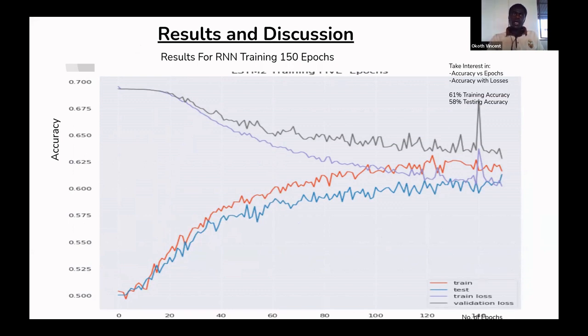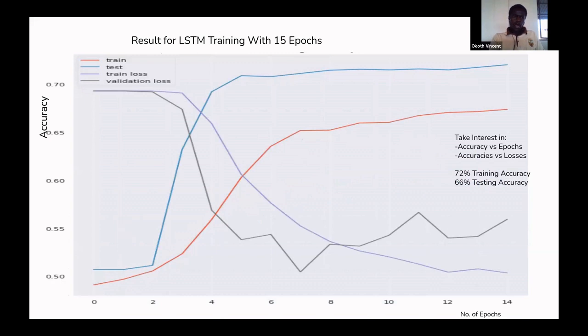Training accuracy is how the model learns, what it's classifying correctly. Testing accuracy is comparing which ones have been classified correctly, true positives and true negatives. For LSTM, you can see an improvement because training accuracy goes up to 70% with test accuracy increasing to 66%.